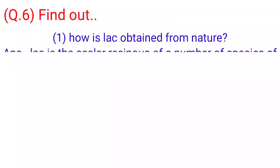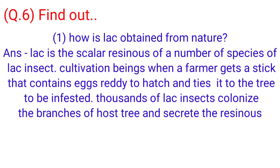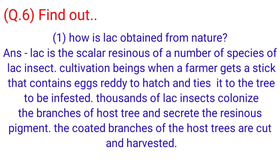Question 6: Find out. 1. How is lac obtained from nature? Answer. Lac is a scarlet resinous secretion of a number of species of lac insect. Cultivation begins when a farmer gets a stick that contains eggs ready to hatch and ties it to the trees to be infested. Thousands of lac insects colonize the branches of host trees and secrete the resinous pigments. The coated branches of the host trees are cut and harvested.